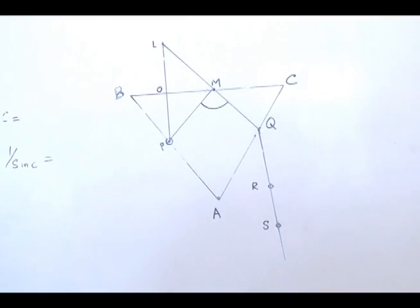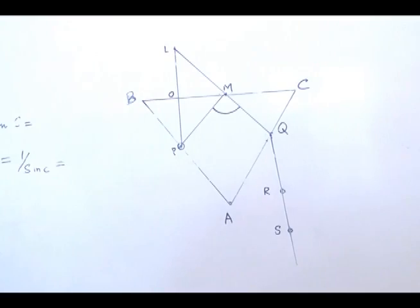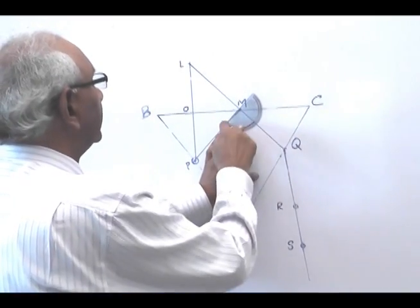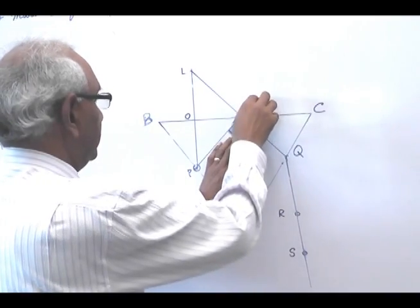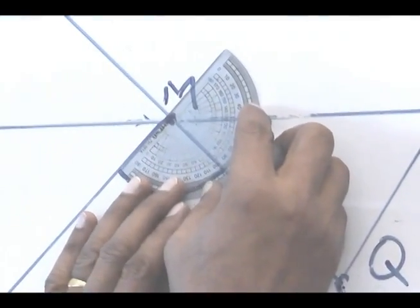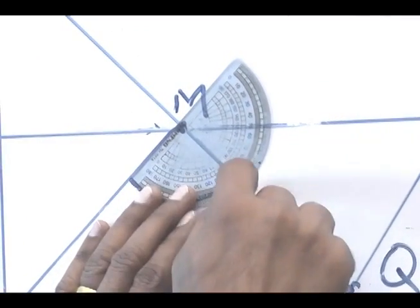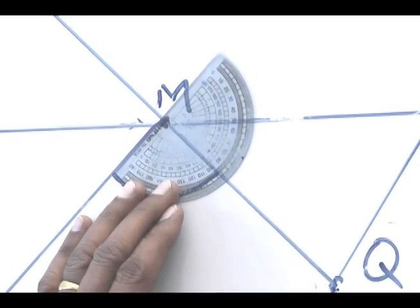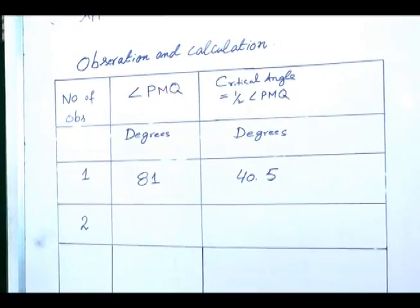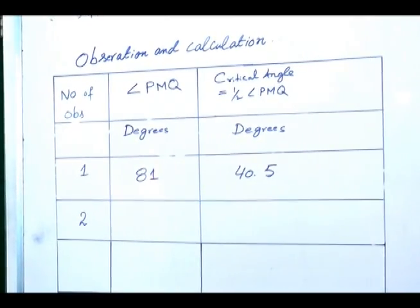The angle formed at M, that is angle PMQ, can be measured using the protractor, and this angle is equal to angle PMQ. Keeping this line parallel to PM, this line will measure the angle PQM. The angle PMQ measured from the ray diagram comes out to be 81 degrees.